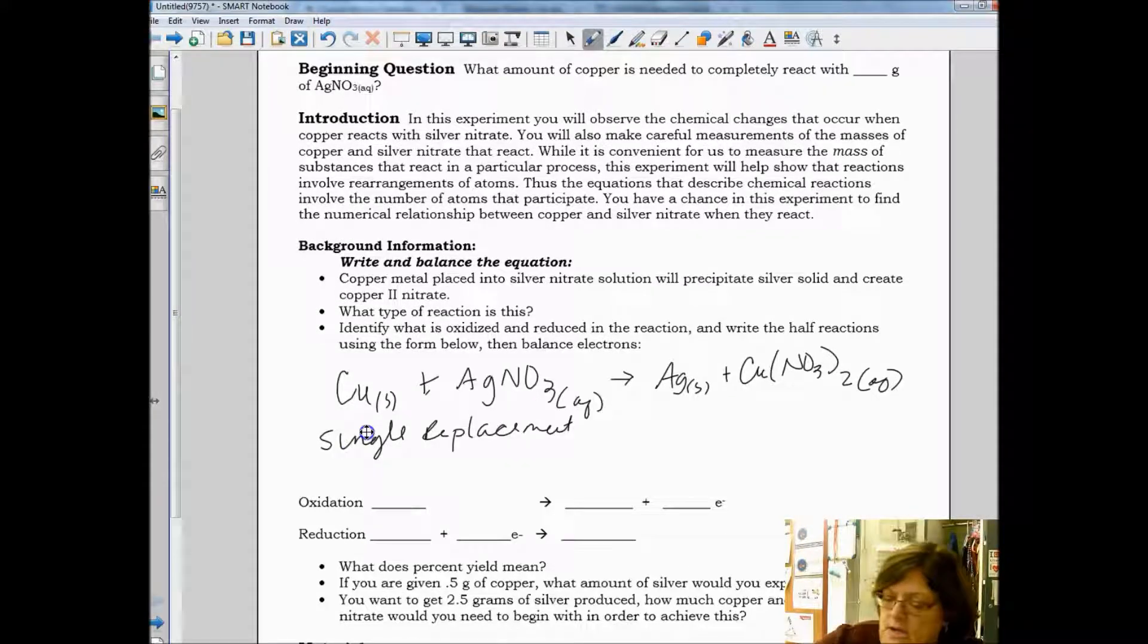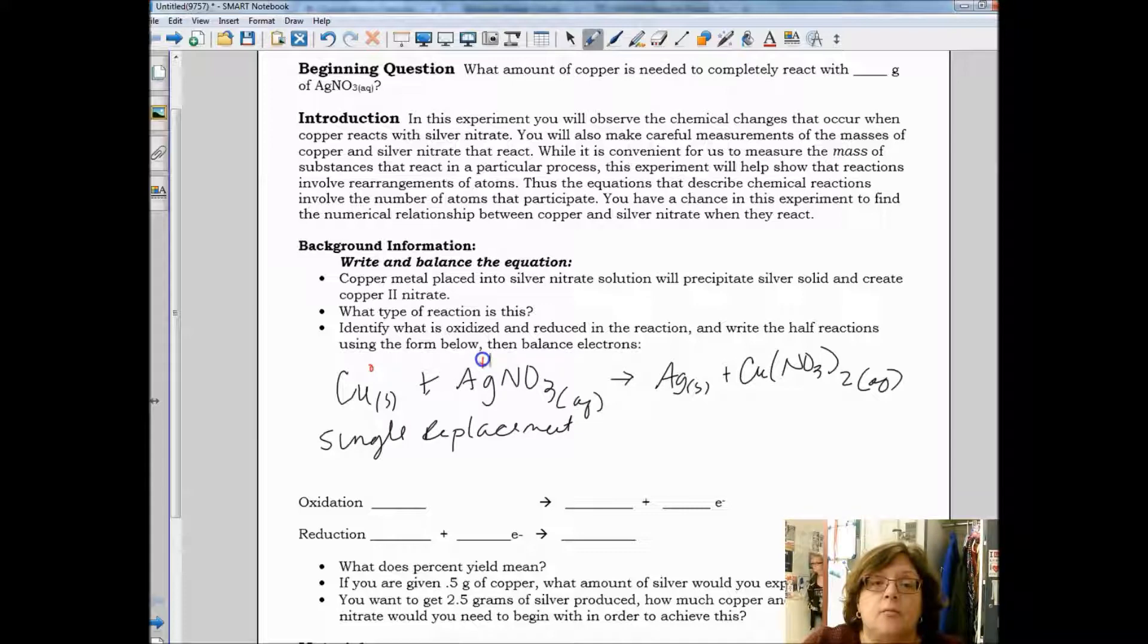If we think about oxidation numbers, we know the copper is going to have an oxidation number of zero because it's an element by itself. Silver is going to have a plus one, the nitrate is going to be a negative one. The silver on this side is going to have an oxidation number of zero, this copper has an oxidation number of two, this nitrate has an oxidation number of negative one.